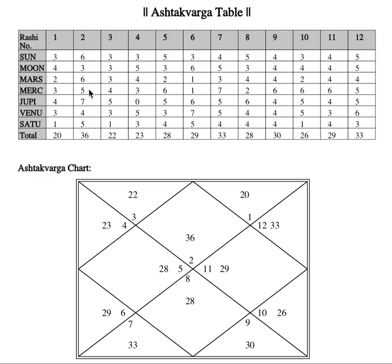Mercury has five points — decent enough. Jupiter has seven points there, but Jupiter is a functional malefic in this chart. Don't forget that for Taurus and Libra ascendants, Jupiter is a dreaded malefic, because the Lagna lord is the arch rival of Jupiter — which is Venus.